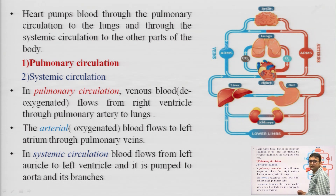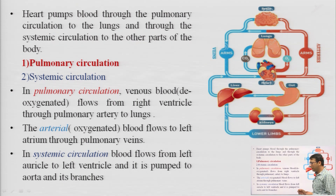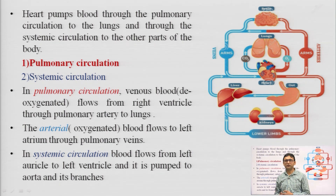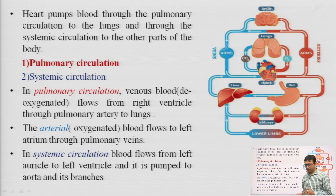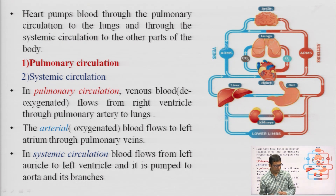The heart pumps blood through the pulmonary circulation to the lungs and through systemic circulation to the other parts of the body. In pulmonary circulation, venous or deoxygenated blood from the right ventricle flows through the pulmonary arteries to the lungs, and oxygenated blood flows back to the left atrium through the pulmonary veins. In systemic circulation, blood flows from the left atrium to the left ventricle and is pumped to the aorta and its branches.